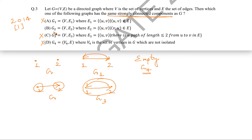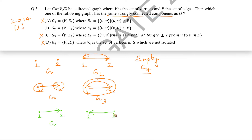By elimination, option B must be the answer. Let's verify with an example where G has an edge from 1 to 2. G2 has the same vertex set, and E2 is defined as {(u, v) such that (v, u) is an edge in G} — essentially the reversed edges. So (2, 1) becomes an edge in G2. Both G and G2 have two strongly connected components, confirming B is correct.